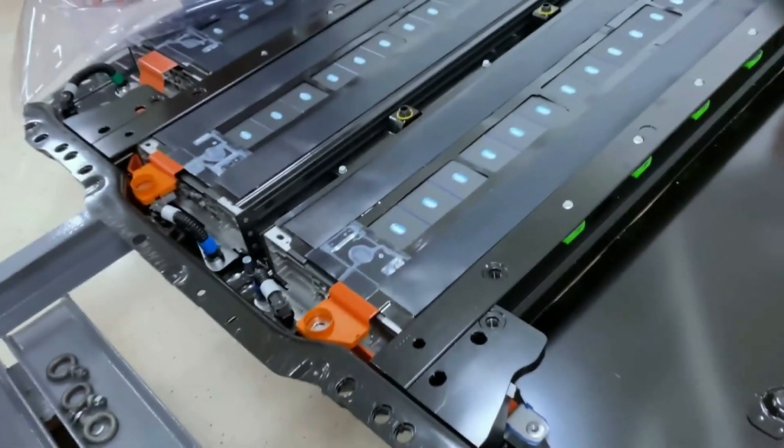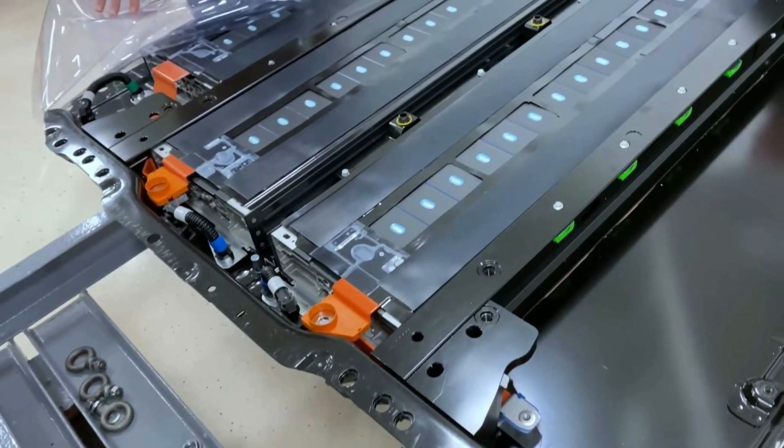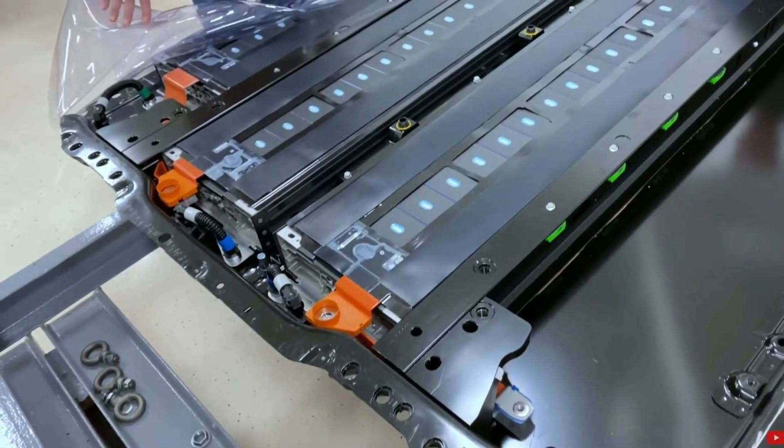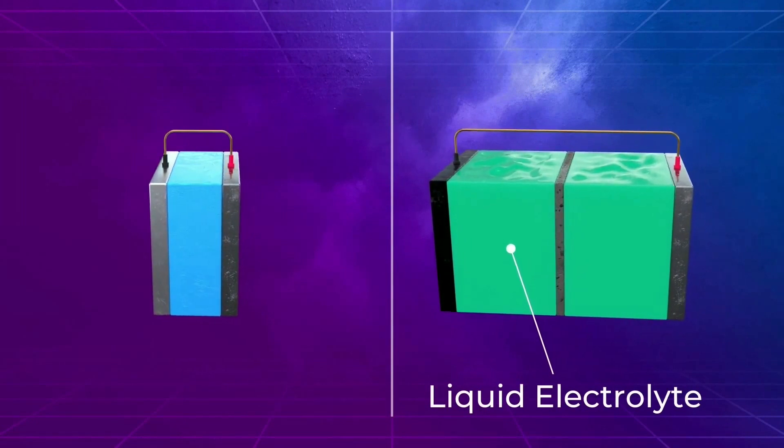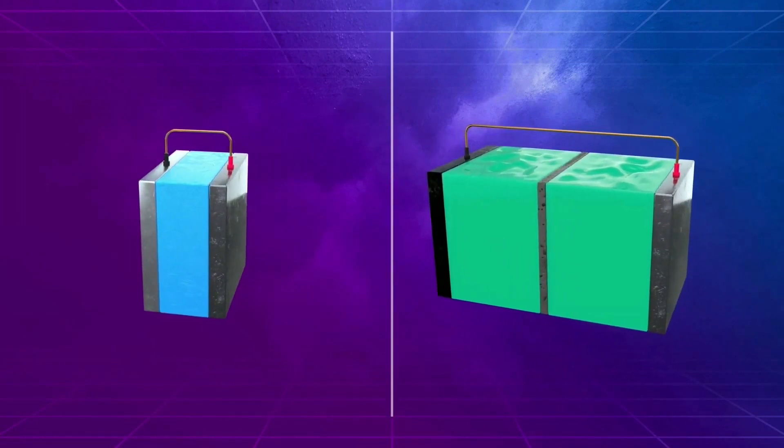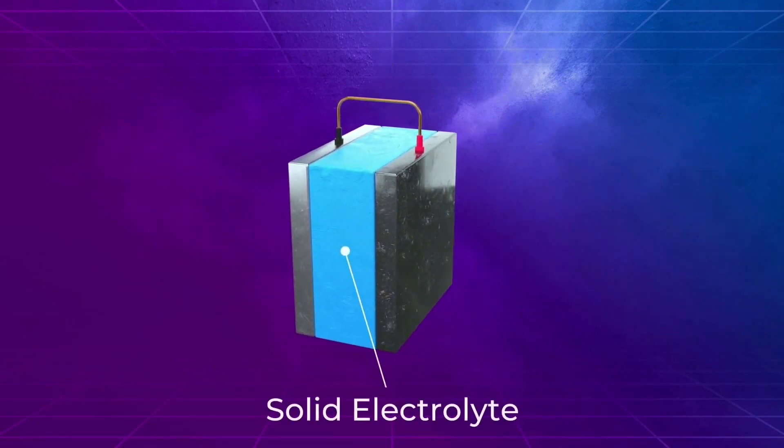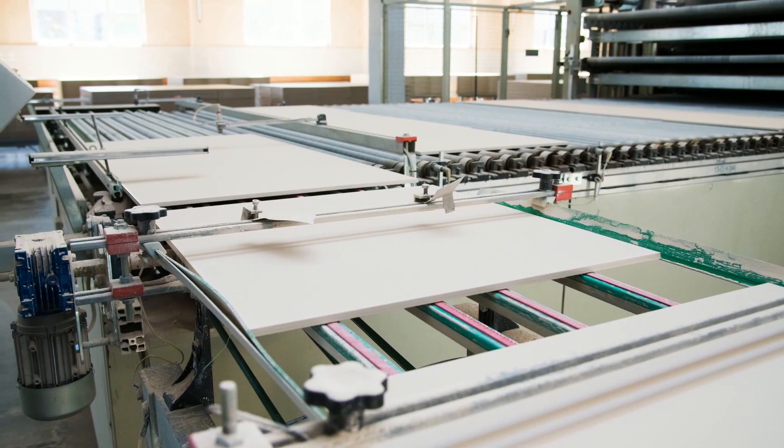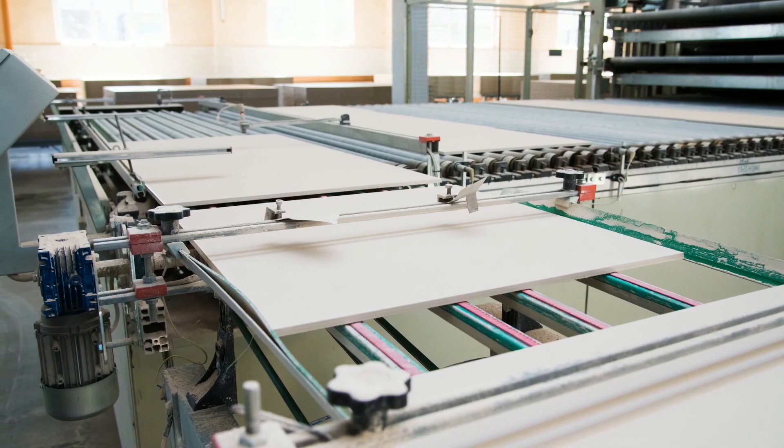However, how does a solid-state battery function? Solid-state batteries, surprisingly, have a lot in common with regular lithium-ion batteries. The sole difference is that instead of a liquid electrolyte, a solid electrolyte is used in a solid-state battery. Glass, ceramic, and other materials can be utilized for this purpose.